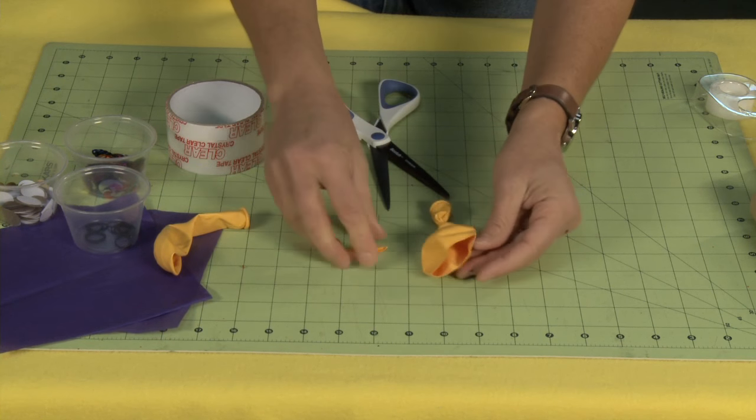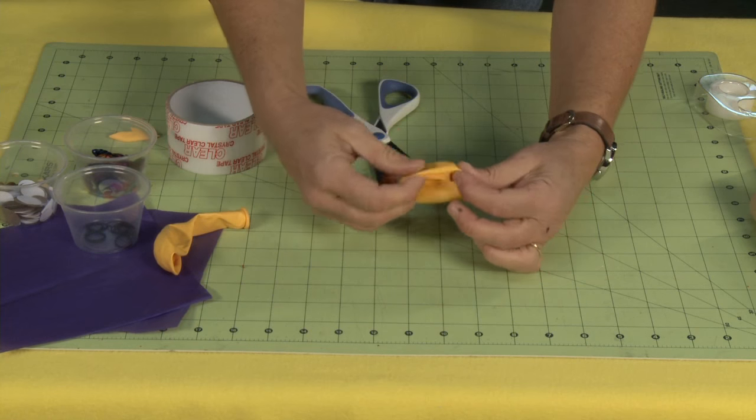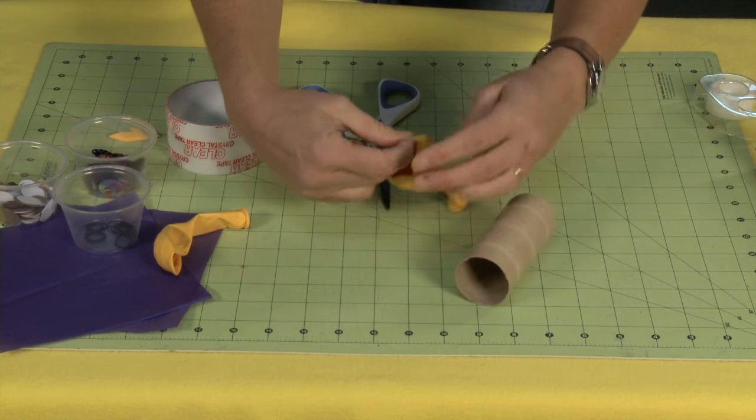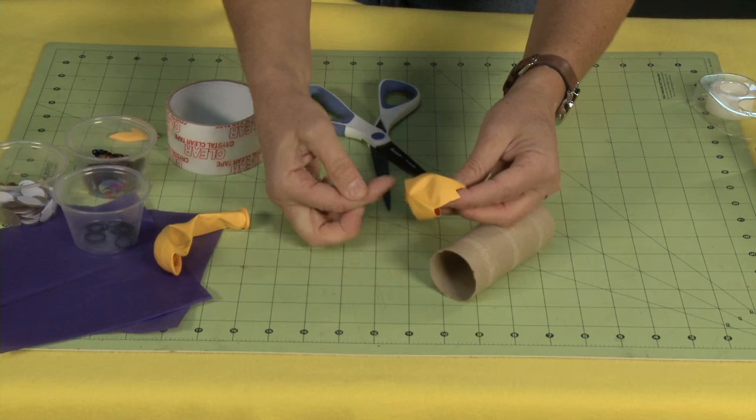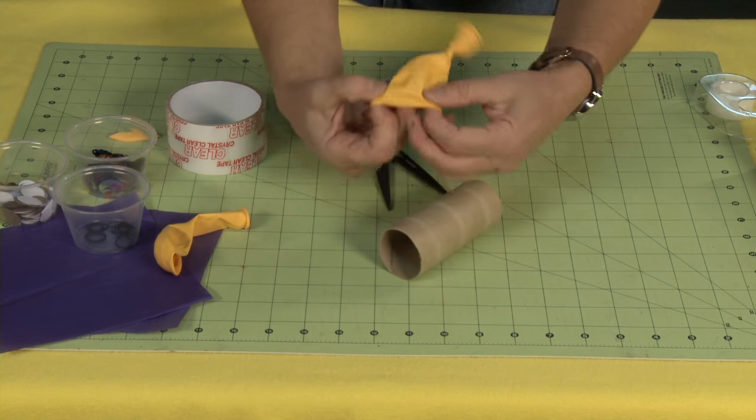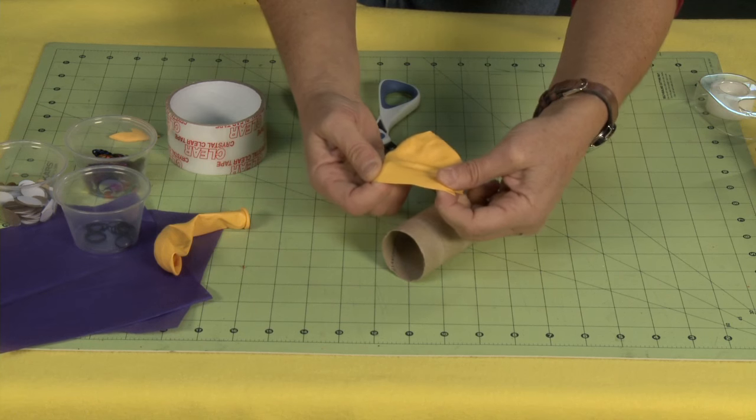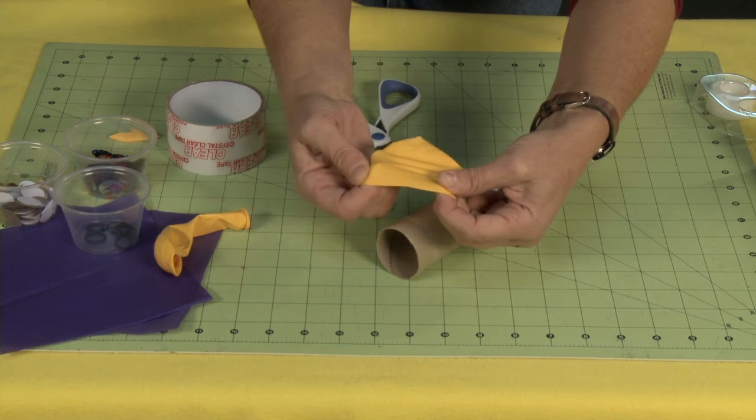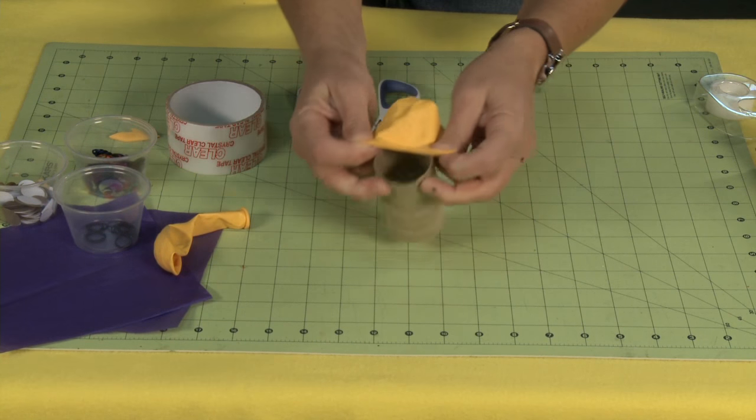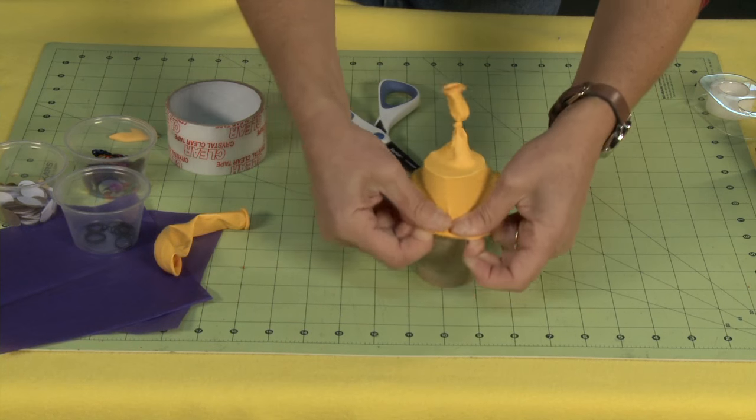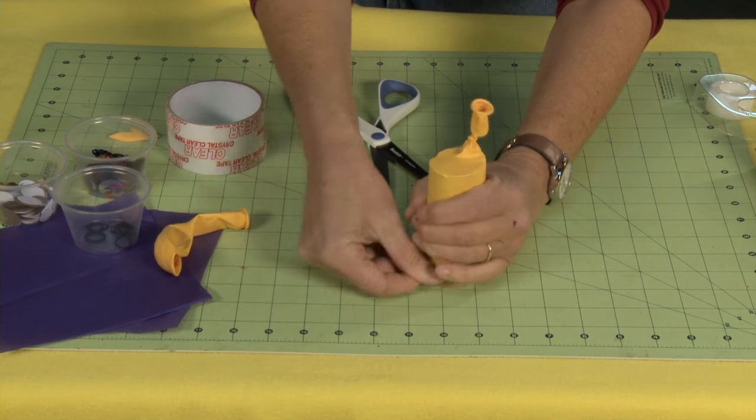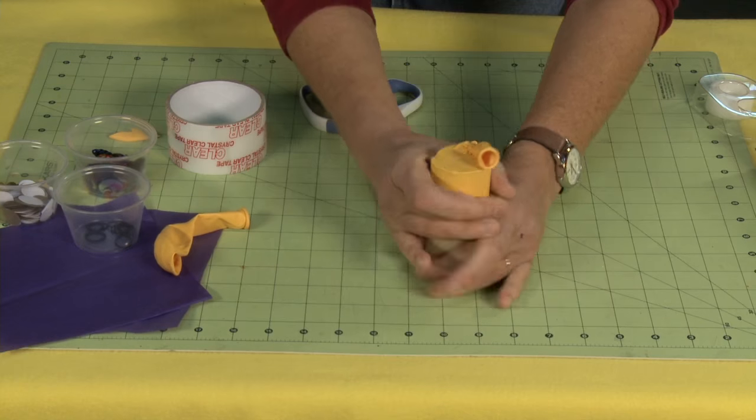Sometimes when you do this, if your balloon has been sitting around your house for a while, it can degrade. And if it degrades, it can split down the middle when you're trying to do this next step. Hopefully it won't, but if it does, just make sure you have a couple extra balloons on hand. I'm going to open this up with my fingers, almost like a bathing cap, and I'm just going to put it right over top and just kind of pull it down.